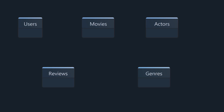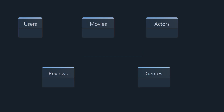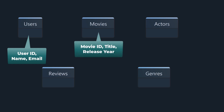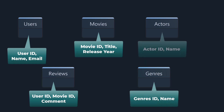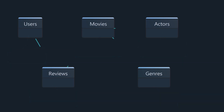Before creating any tables, take a step back and ask: what kind of data does this app need to store, and how will that data be used? For this example we're designing a basic movie streaming platform called StreamFlicks. We need to store users and their profiles, movies with details like title and release year, reviews, genres to organize the content, and actors who appear in multiple movies. More importantly, we need to understand how all these things are connected.